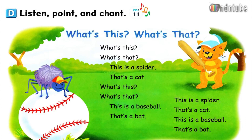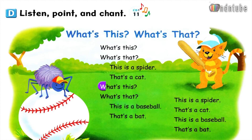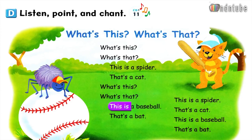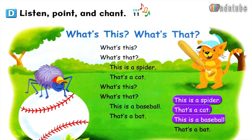What's this? What's that? This is a spider. That's a cat. What's this? What's that? This is a baseball. That's a bat. This is a spider. That's a cat. This is a baseball. That's a bat.